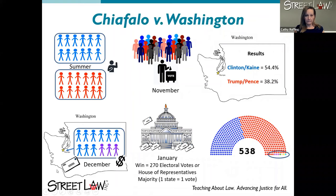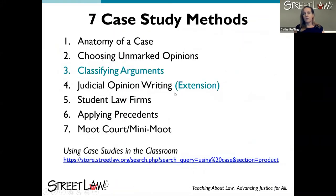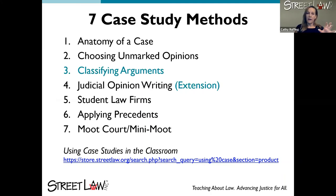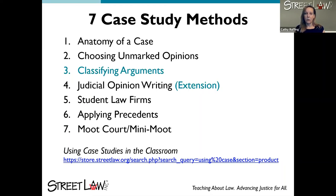Once the election was over and the electors were fined, they challenged that fine in their state courts. We have seven case study methods, and if you look at the elements of each case summary, we consider those like ingredients in a recipe. If you mix those ingredients in different ways and sometimes leave some of them out, you can make these seven case study methods. There is a link to more detailed instructions about all seven methods. They go from the most simple — the Anatomy of a Case — to the most complicated — a full Moot Court.